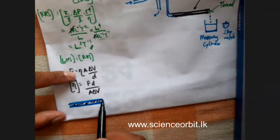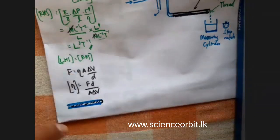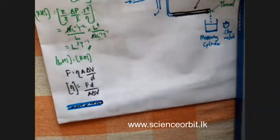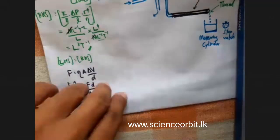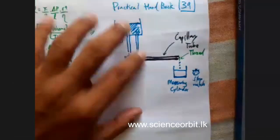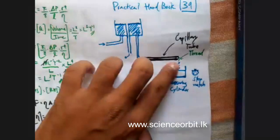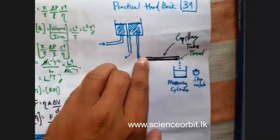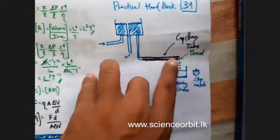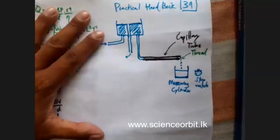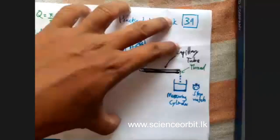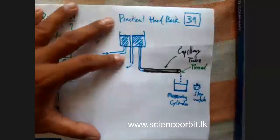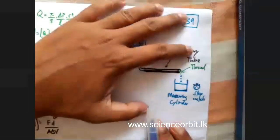If the thread is not there, water will sometimes form a meniscus at the end, and there will be an excess pressure created because of this meniscus. We have to avoid that, so for that only we use this thread. Also, we don't want water to splash out — Poiseuille's law is valid only for laminar flows, which means low speed.